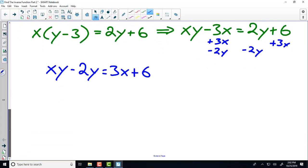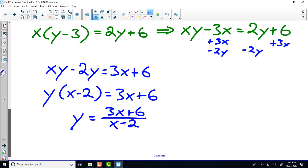We did that, so on the left-hand side we can factor out a y, and then we divide both sides by x minus 2. And the only thing left to do at this point is to write it in proper inverse notation. Our original function was p of x, so our final answer is going to be p inverse of x equals 3x plus 6 all over x minus 2.